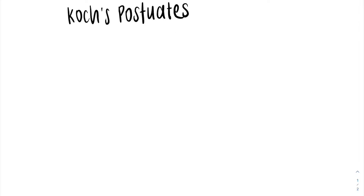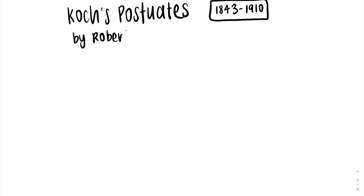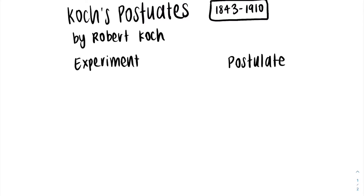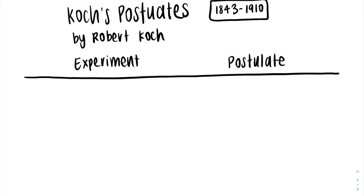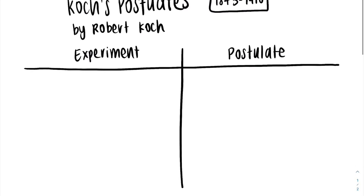Robert Koch is a German microbiologist who developed four postulates that helped to identify the cause of an infectious disease. Now let's take a look at his experiment and the postulates side by side.